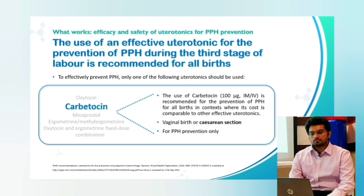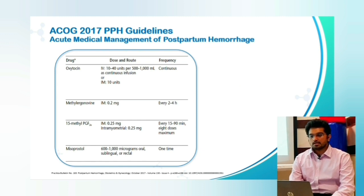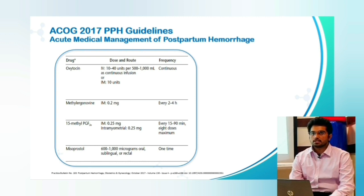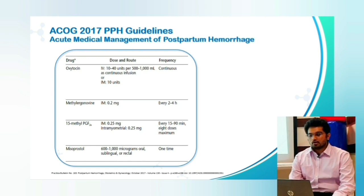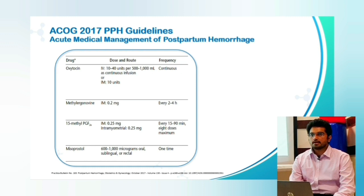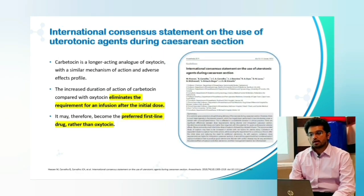The ACOG 2017 practice bulletin talks about the acute medical management of postpartum hemorrhage. Oxytocin can be given as 10–40 units in 500–1000 ml as continuous IV infusion or 10 units IM after delivery of the anterior shoulder. Methyl ergometrine can be given as 0.2 mg IM every 2–4 hours. Carboprost (15-methyl PGF2-alpha) can be given as 250 micrograms IM or intramyometrial every 15–90 minutes, maximum 8 doses. Misoprostol 600–1000 micrograms per rectal, oral, or sublingual as a single dose. The international consensus states carbutocin is a long-acting analog of oxytocin with a similar mechanism and adverse effect profile, and its increased duration of action eliminates the need for continuous infusion, potentially making it a first-line drug preferred over oxytocin.